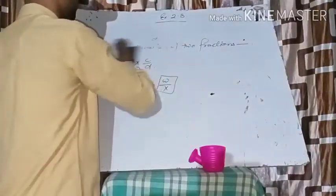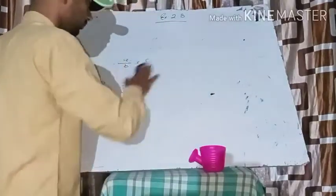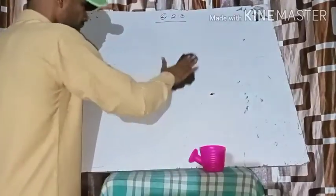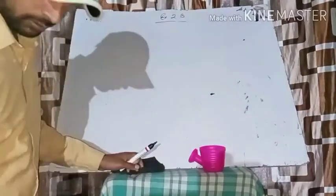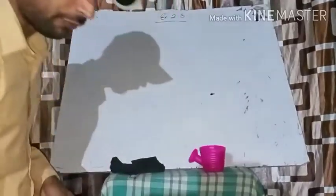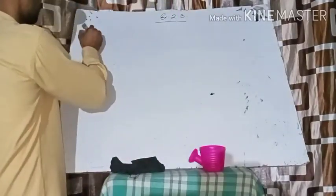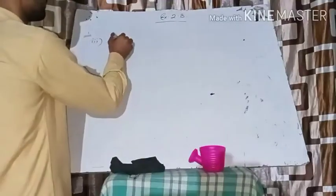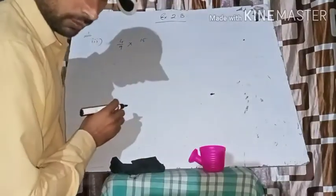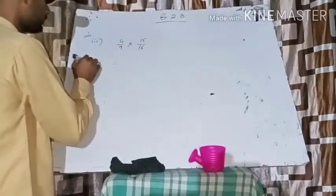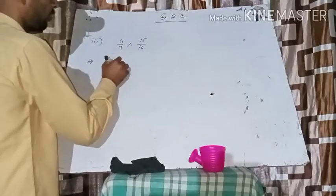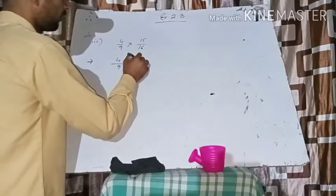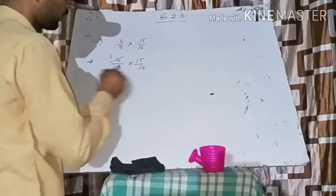In your first question, find the product, third part: four upon nine into fifteen upon sixteen. Now see, the four and sixteen - four, four, sixteen - so they are cancelled.